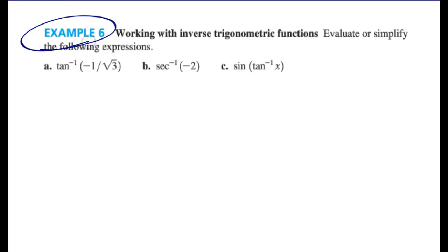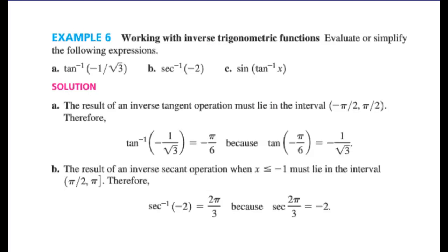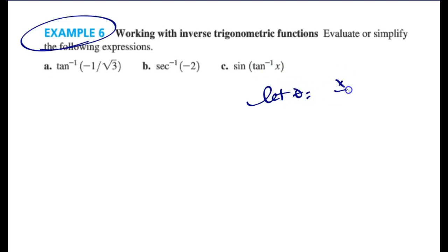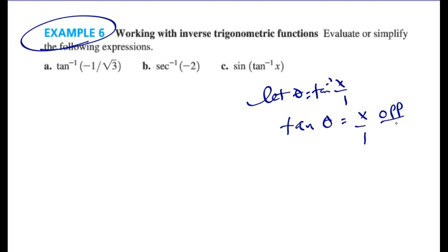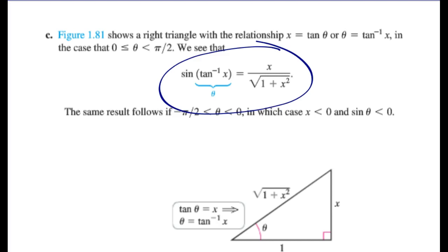Problem 6 is one I'd expect you to know, so please work it out. For the triangle problem: let theta = tangent inverse(x/1). Then tangent(theta) = x/1, so the opposite is x and the adjacent is 1. Use a² + b² = c² to find the hypotenuse = √(1 + x²). This video is getting long — finish up the remaining problems yourself. I hope this video was helpful. Email me with questions. Good luck with your lesson.